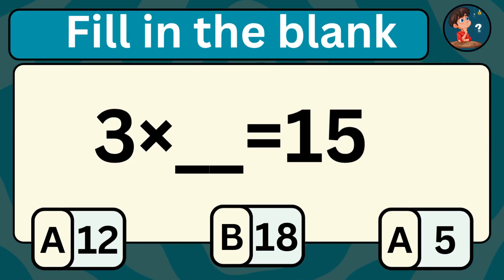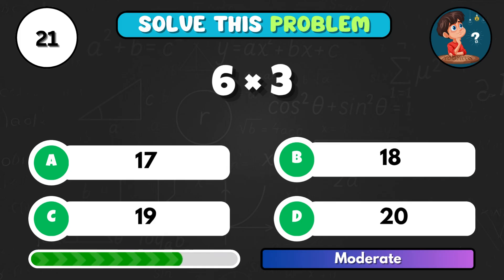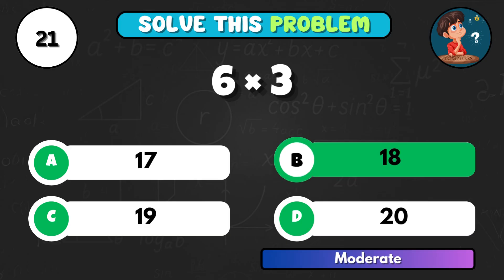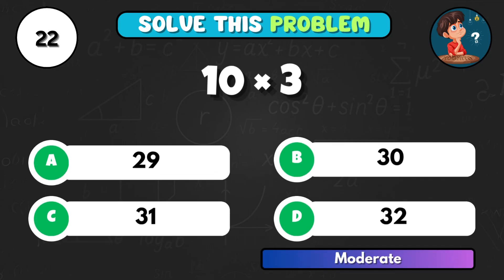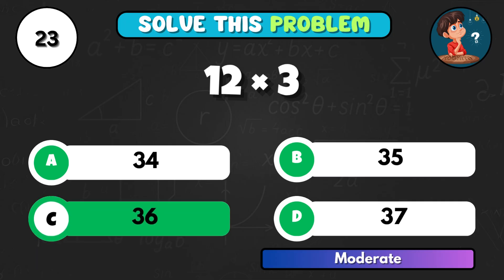Can you fill in the blank? 3 times what number equals 15? 6 times 3 equals... Correct answer B, 18. 10 times 3, do you know it? That's B, 30. And 12 times 3? Answer is C, 36.